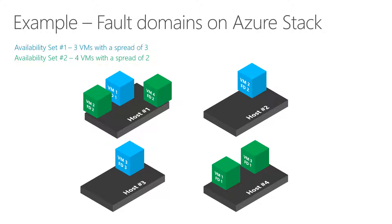Here's another example. The blue boxes are an availability set with three VMs with a spread of three — meaning that when you deploy three VMs into this availability set, these VMs will end up on three different nodes in our stack. When we deploy a different availability set with four VMs and a spread of two, those VMs are only spread across two nodes. Availability sets are a good way to implement affinity rules — to make sure, for example, that two domain controllers are not running on the same physical node.